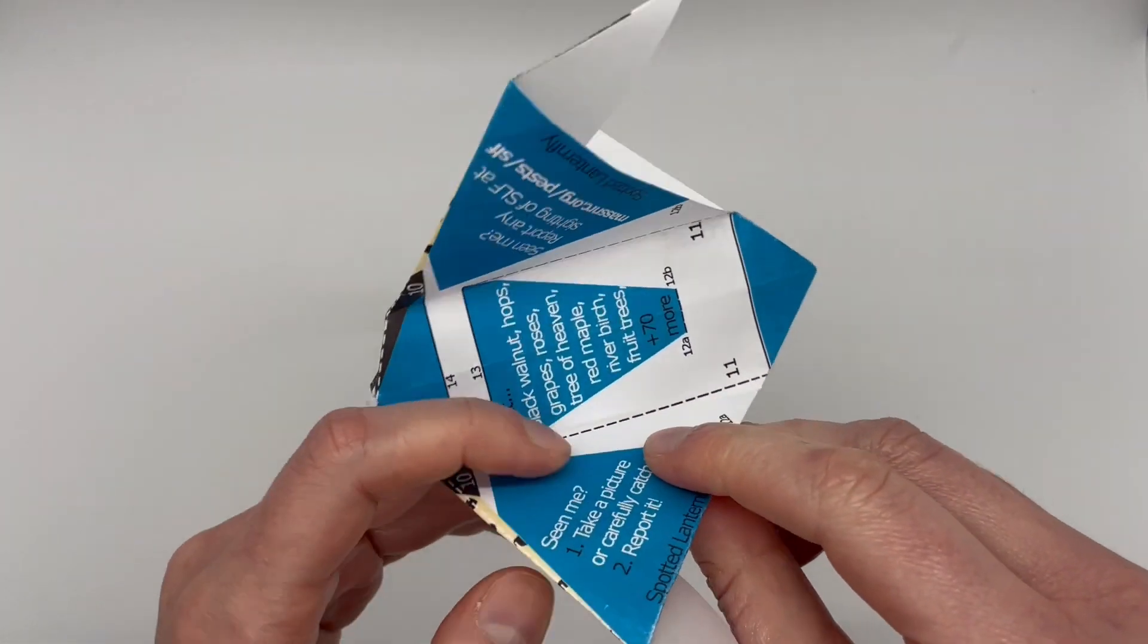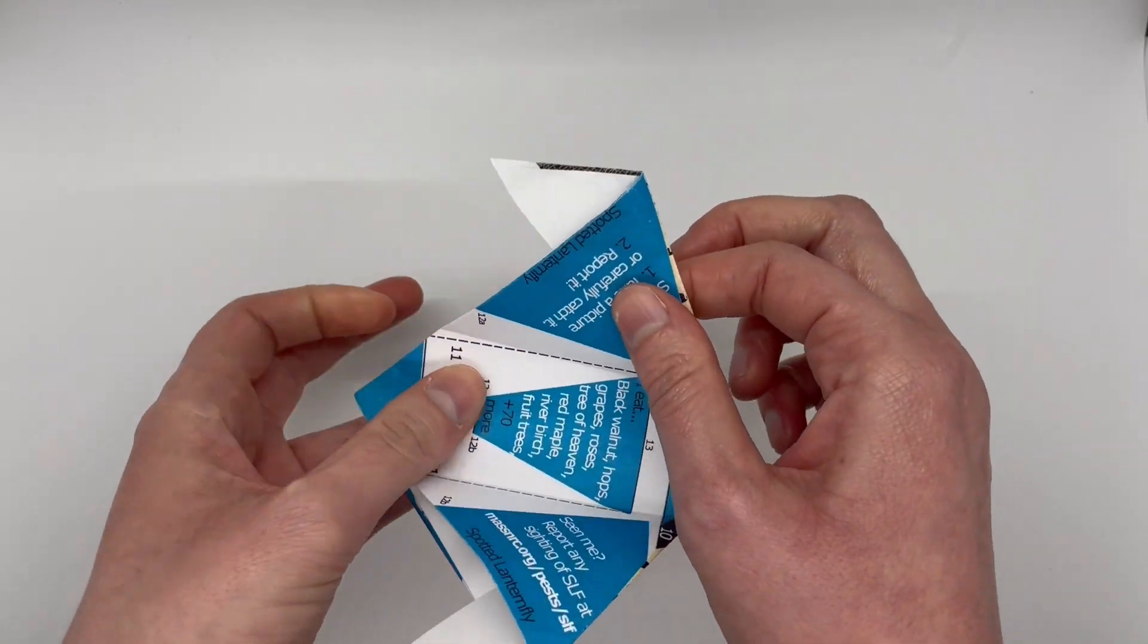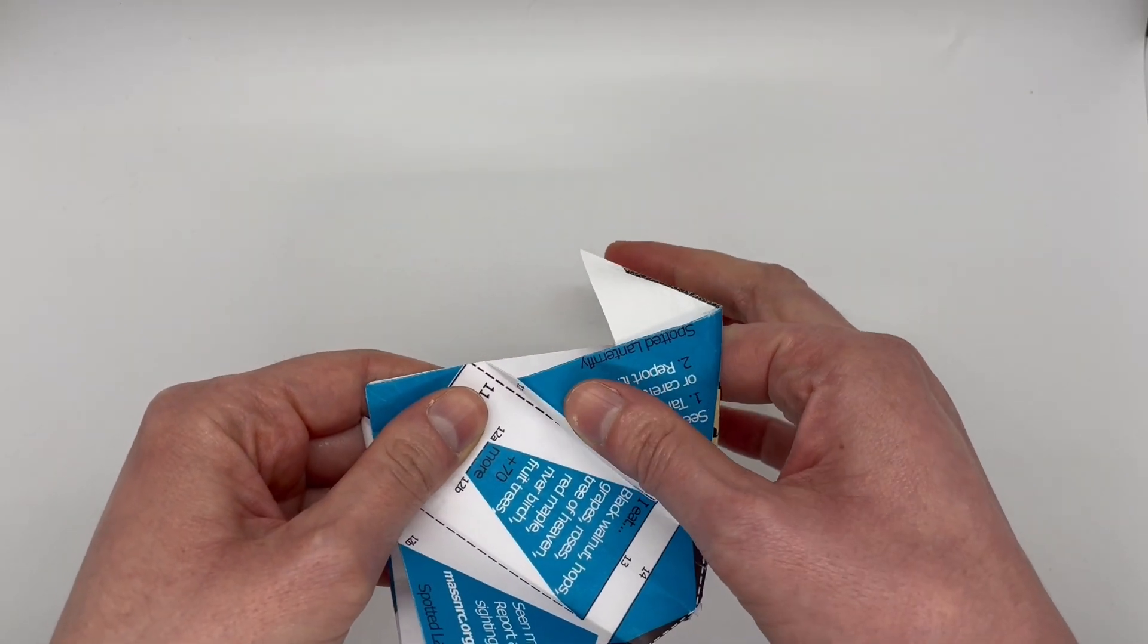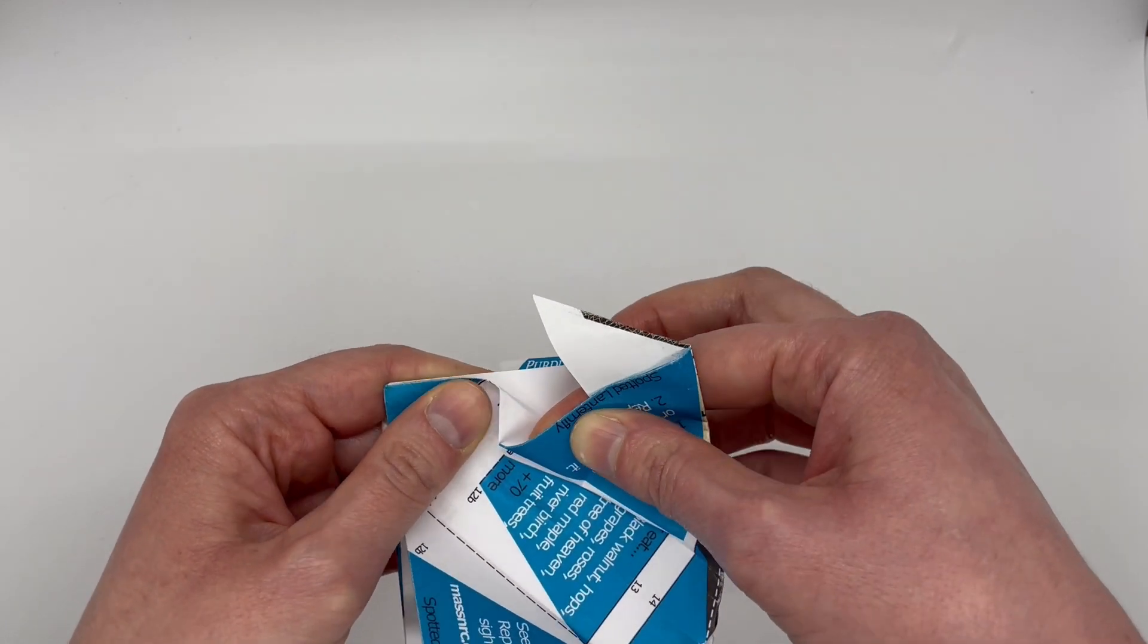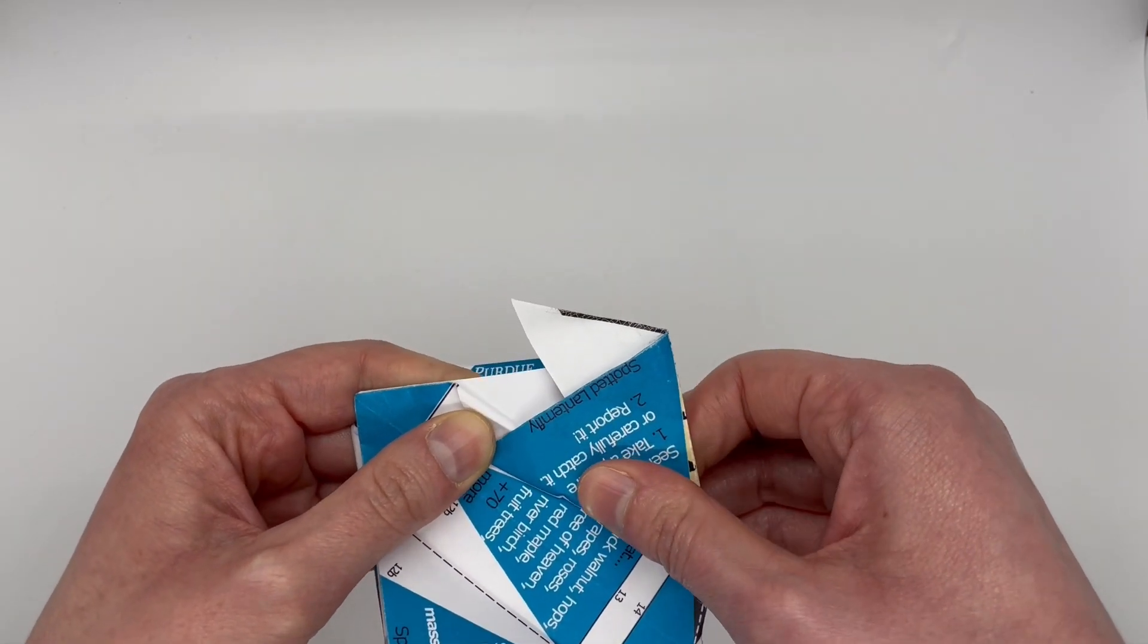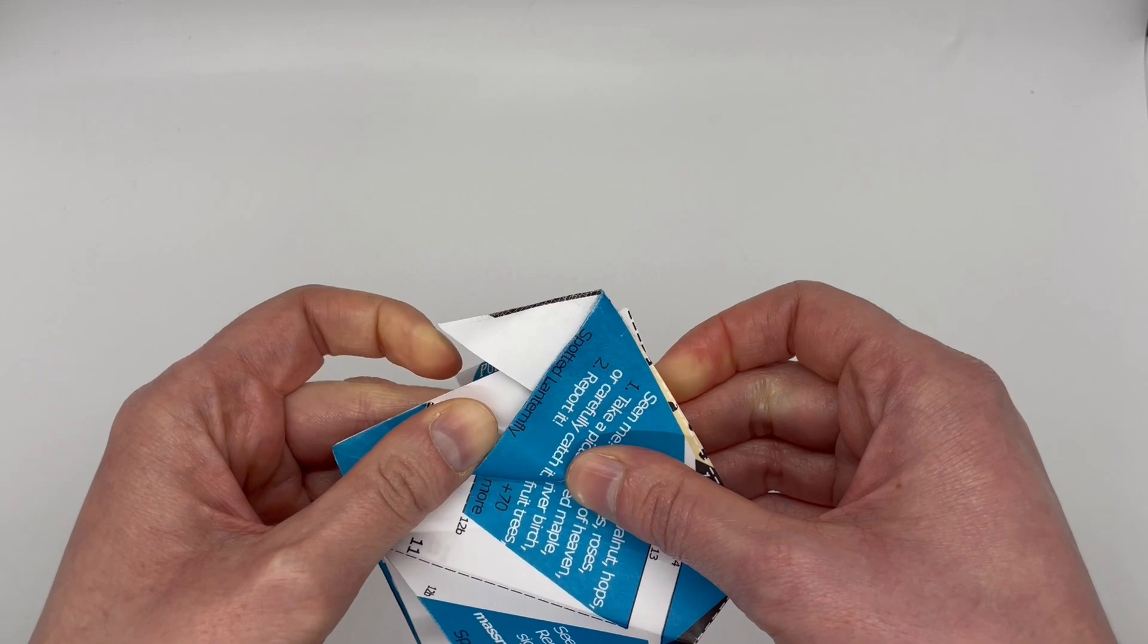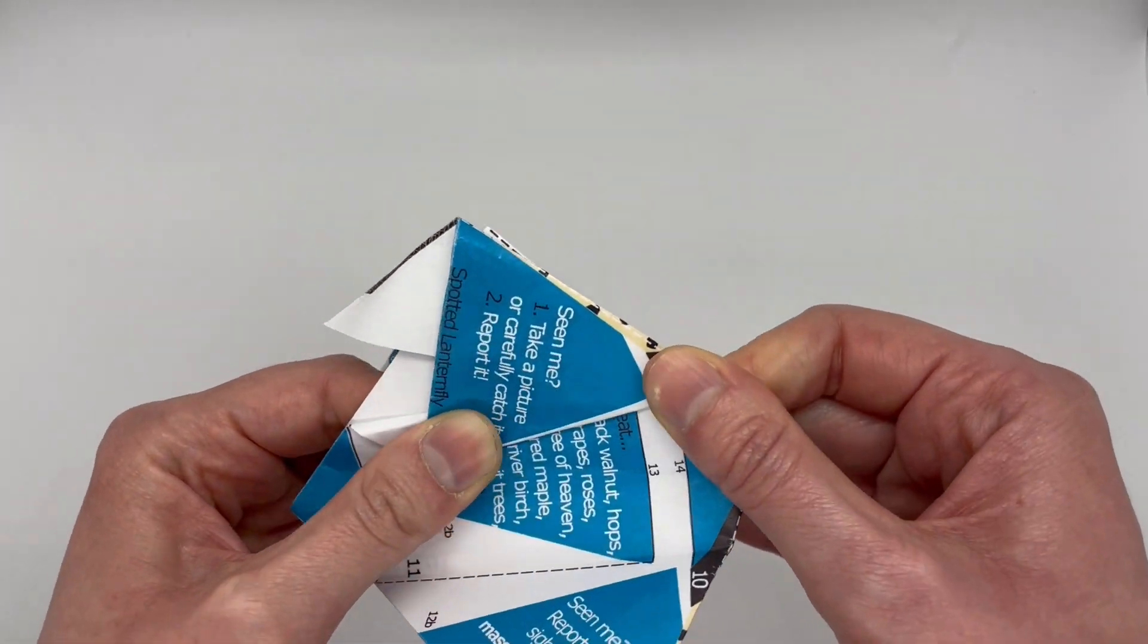Now use that crease to fold the lines labeled 12A and 12B so that the blue lines on that section touch the blue in the center. Or, if you have trouble with this step, you can skip it. It makes it look a little bit more like a real spotted lanternfly, but it isn't necessary.